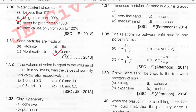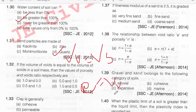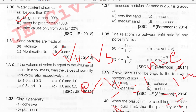If the volume of voids VV is equal to the volume of solids VS, find the porosity and voids ratio. Voids ratio E = VV / VS = 1. Using the relation n = E / (1 + E), n = 1 / (1 + 1) = 1/2 = 0.5. So porosity is 0.5 and voids ratio is 1. Option C.